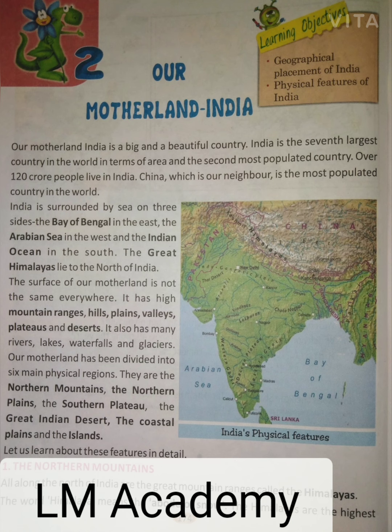Our motherland has been divided into six main physical regions. Hamari matra bhoomi ko chhe mukhya bhogolik bhautik kshetron mein bata gaya hai. They are: the Northern Mountains — Uttari Parvat; the Northern Plains — Uttari Maidan; the Southern Plateaus — Dakshini Pathar; the Great Indian Desert — Vishal Hind Marusthhal; the Coastal Plains — Samudra Tat Kshetra; and the Islands — Dweep.